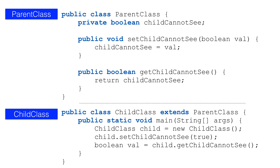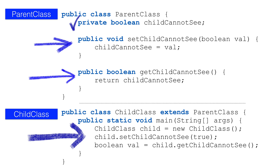The private methods and attributes cannot be used directly from the child class — they're invisible to it. That doesn't mean they can't be used. Say we have a private variable in the parent. It can't be accessed directly from the child class. However, if we have public getters and setters, we can modify the variable in the child class. We just can't access it directly.